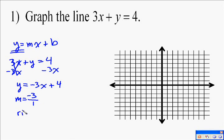Now it is solved for y. I don't have to divide by anything, so my slope is negative 3, and we always put it over 1 whenever we're doing slope. And then my y-intercept is 4.